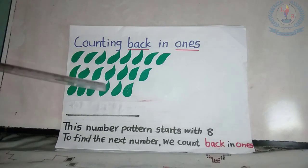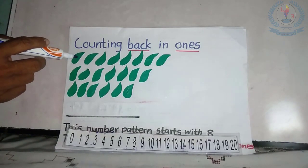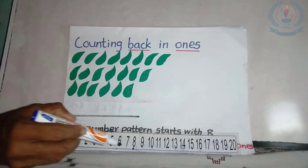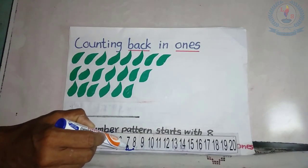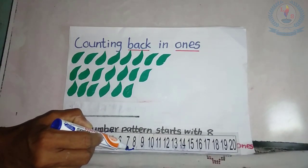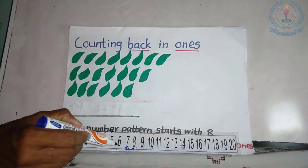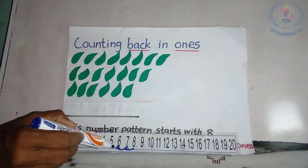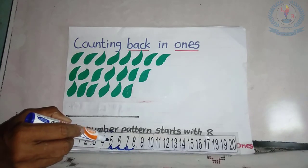So, what comes next? Again, we can use the number track and find the answer. How many leaves are there in the first row? Yes, 8. How many leaves are there in the second row? Yes, 7. We can draw an arrow. We count back in 1's. The third row, there are 6. To find the next number, we count back in 1's. What is the answer? Yes, 5.